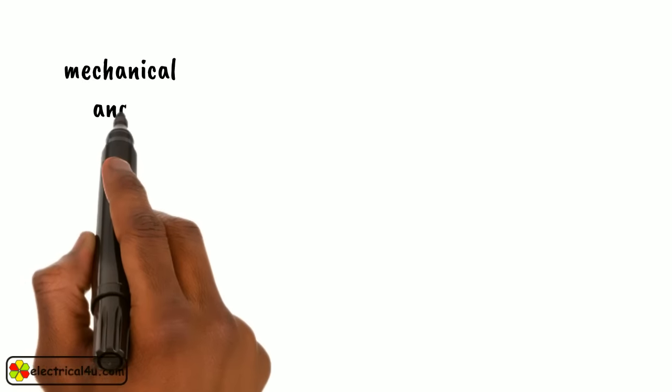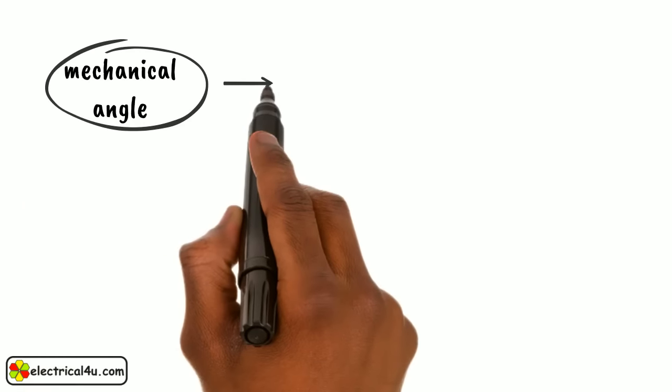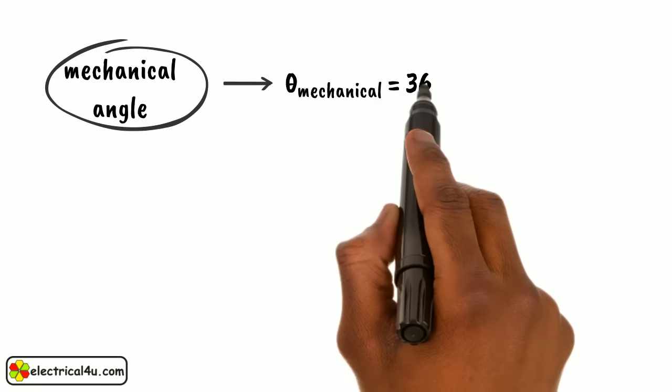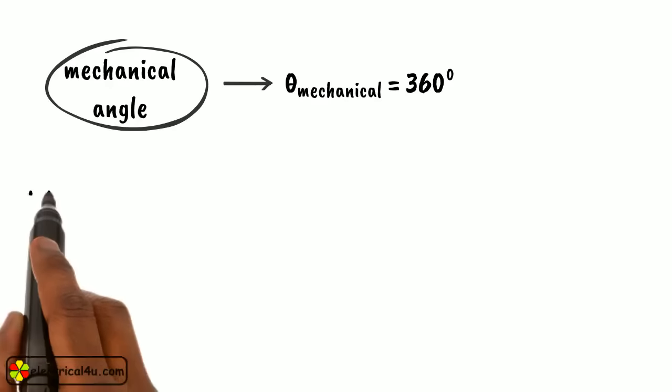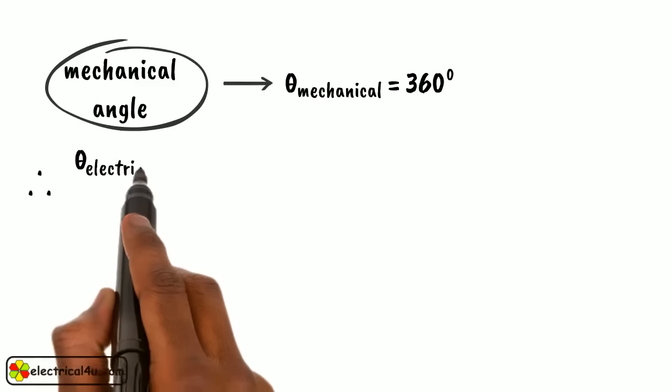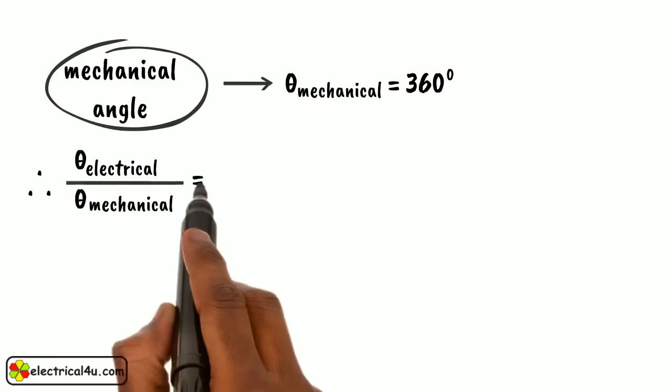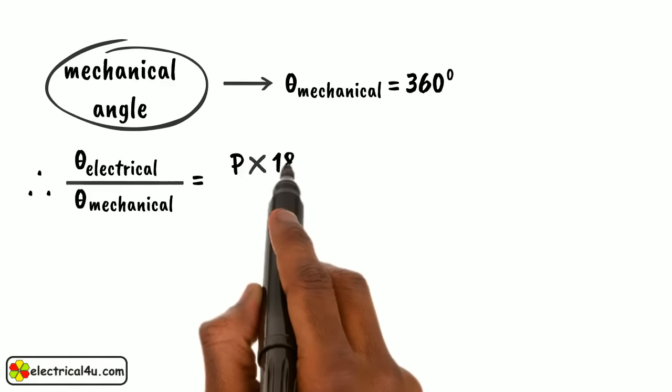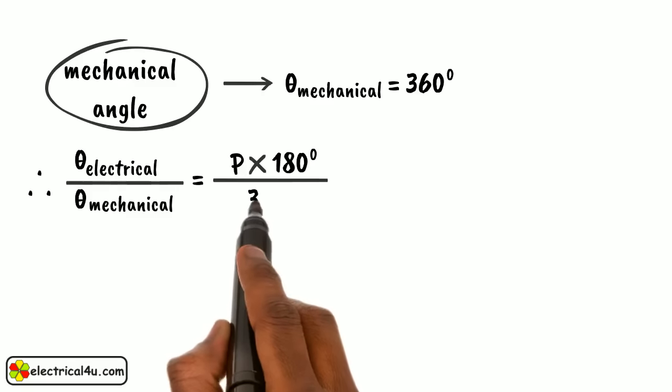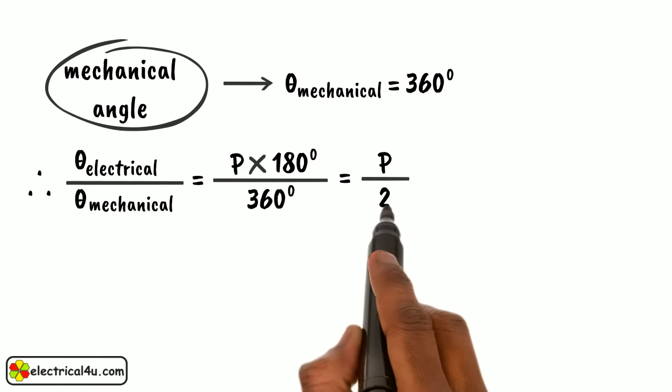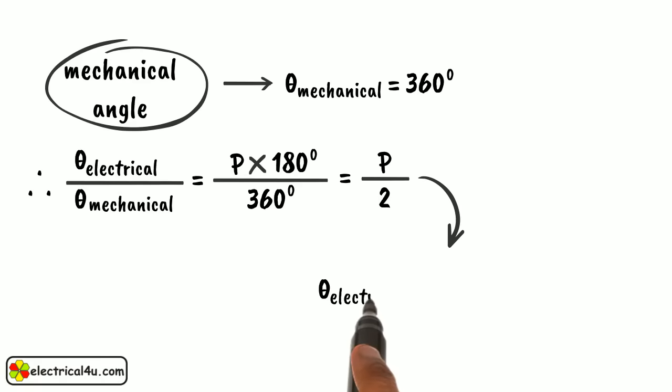The total mechanical angle can be expressed as theta mechanical equals to 360 degrees. Therefore, theta electrical by theta mechanical equals to p into 180 degrees by 360 degrees. That equals to p by 2 theta mechanical. Hence, theta electrical equals to p by 2 into theta mechanical.